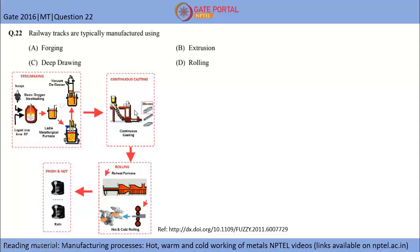Rollers are designed in such a manner that you get the exact shape of the railway track. Here you can see the schematic of rollers, how these rollers are designed and the bloom passes through these rollers to get this shape.